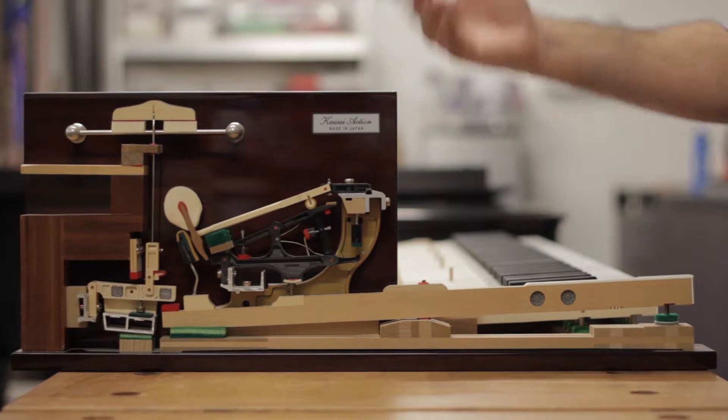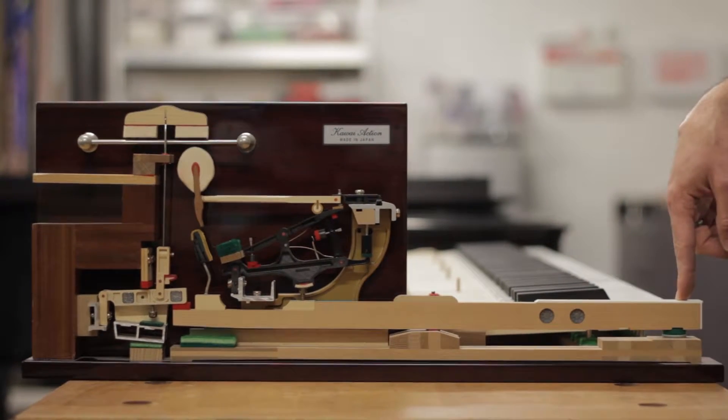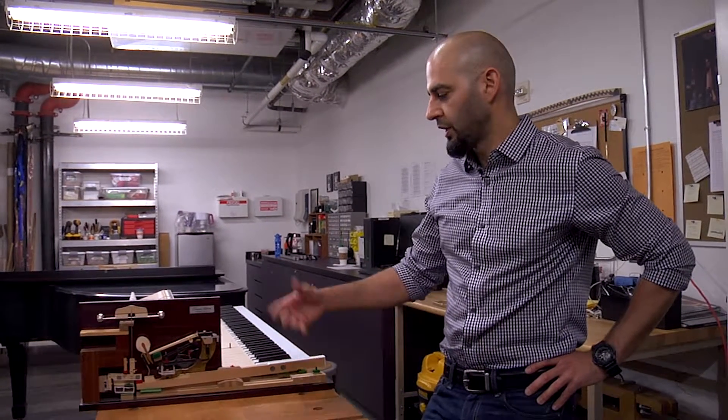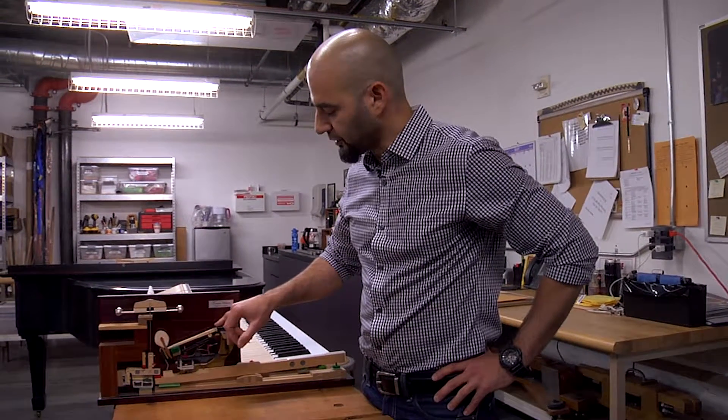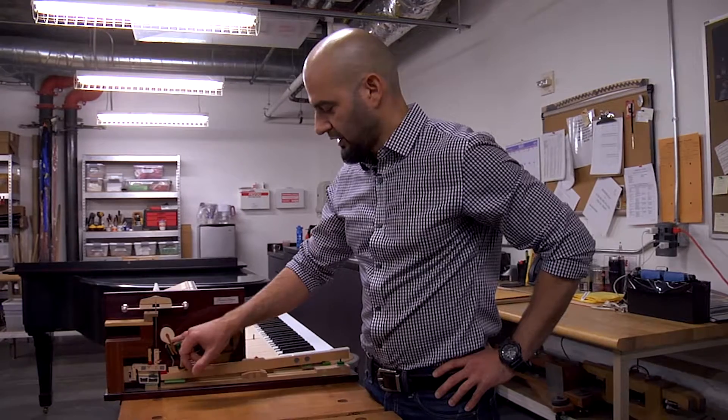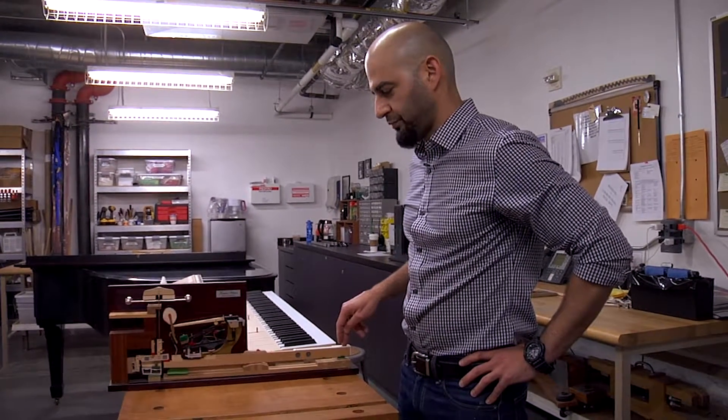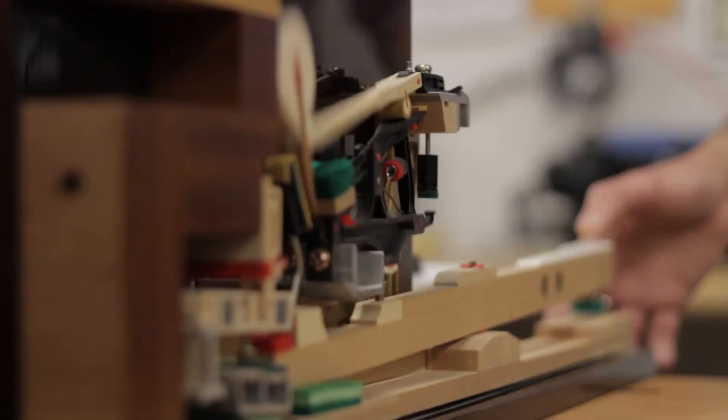So this is just a little cutout, a side profile view of a piano action. So we use this as a teaching diagram and also for demonstration of action regulation and all the different points that the piano can be adjusted. And what really happens when you play a key with force and the hammer comes up and hits the string.